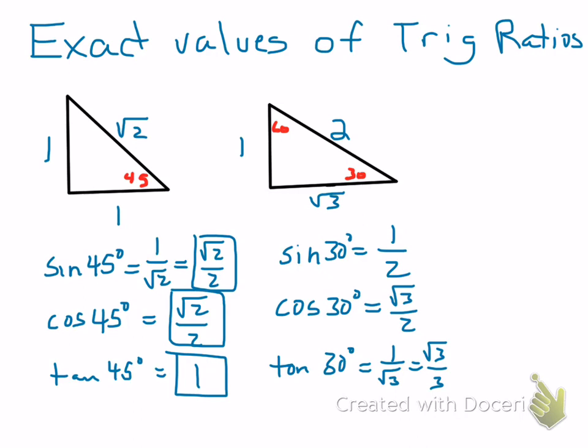The sine of 60 degrees is equal to the opposite side from 60, which is the square root of 3 over 2. Cosine of 60 degrees is the adjacent side to 60, which is 1 over 2.